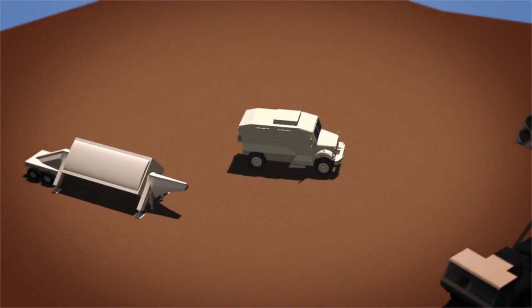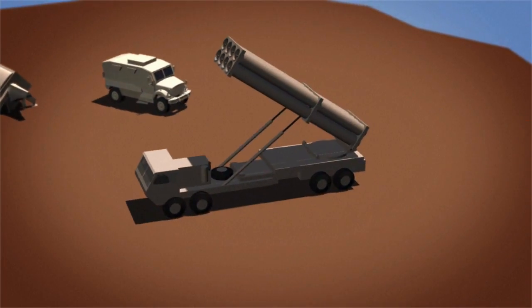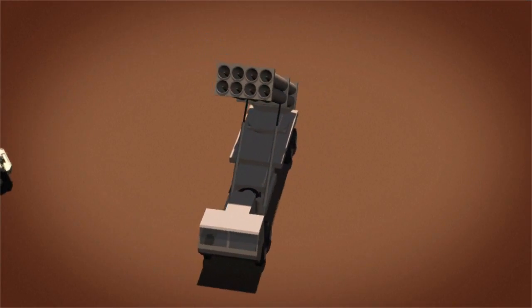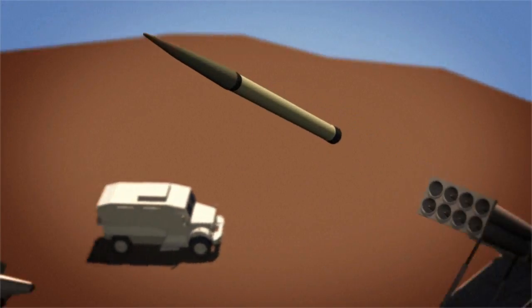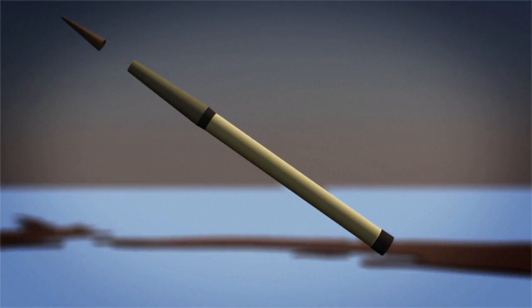The THAAD interceptor is then fired from a truck-mounted launcher, which can carry up to eight interceptors. The interceptor itself is composed of a protective shroud, interceptor or kill vehicle, and booster.